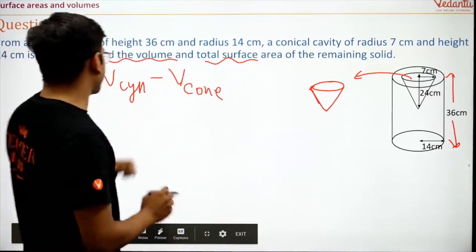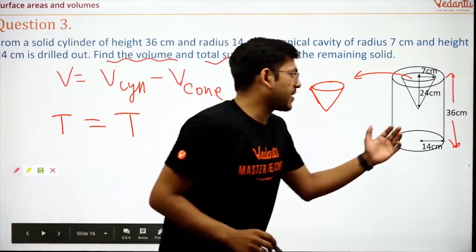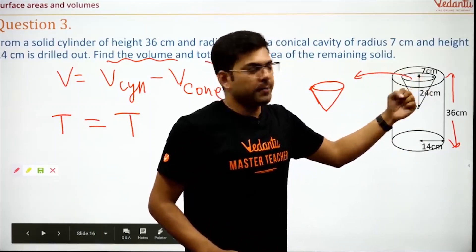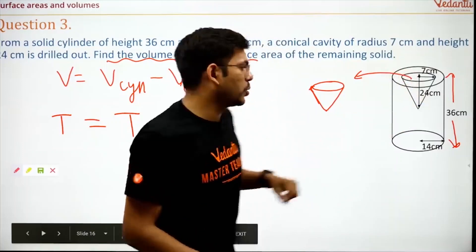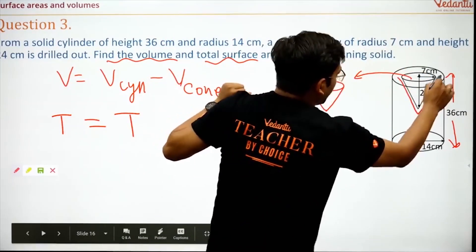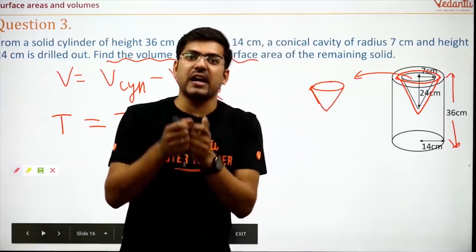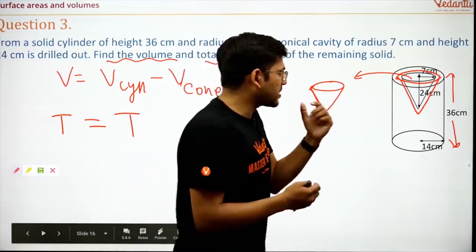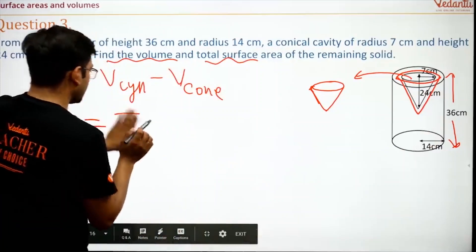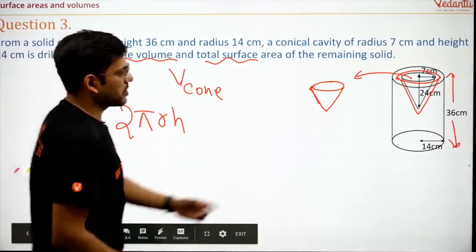When the conical portion has been taken out, the remaining part is left. Volume is straightforward: volume of cylinder minus volume of cone. Now for total surface area — you cannot simply write total surface area of cylinder minus total surface area of cone, because there are specific conditions. I will show you which surfaces are actually visible after the cone is removed.